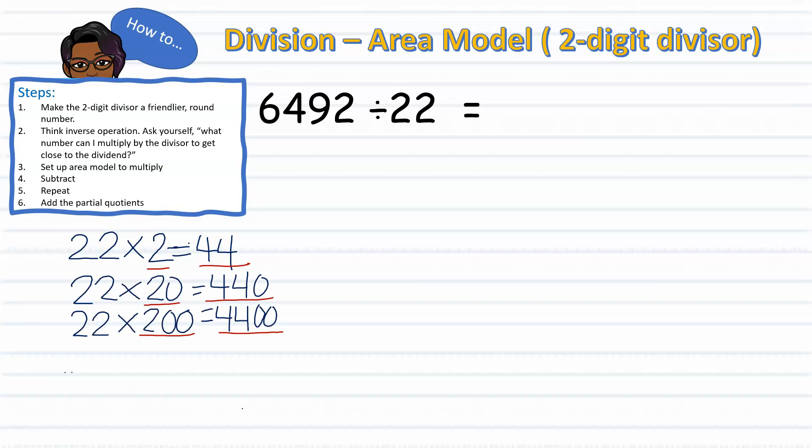Recognizing that we need a larger multiple of 44, that will bring us closer to 6,492, we can start multiplying 22 times 20. That brings us 440 and then 22 times 200, giving us 4,400, which is closer to 6,492. Now, let's just say we went over to 22 times 2,000. Well, following this pattern, we can see that we'll end up with a product of 44,000, which is well above our 6,492. So we'll stick with 22 times 200.